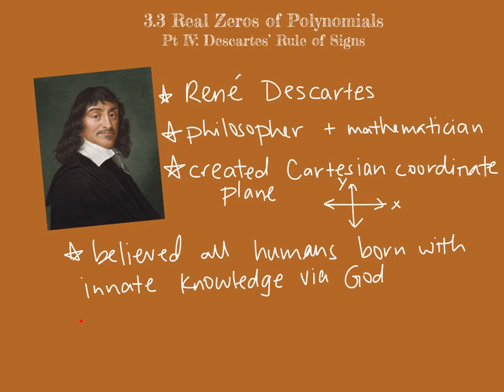He believed that all humans were born with innate knowledge from God rather than through experience, which would later be challenged by John Locke. So that's some cool background info on Descartes. Today we're going to take a look at his rule of signs for determining the number of positive and negative real zeros in a polynomial.